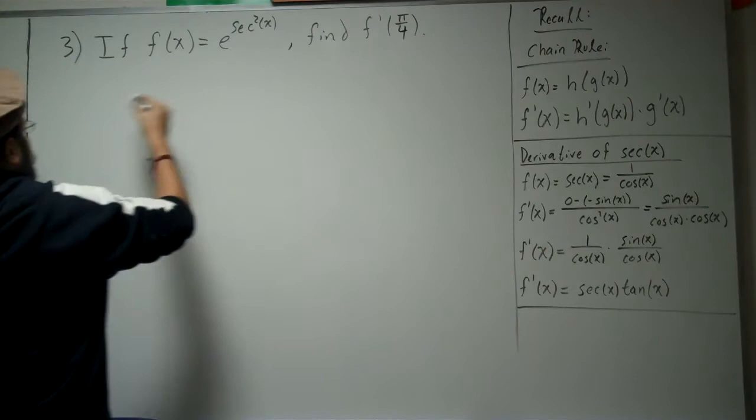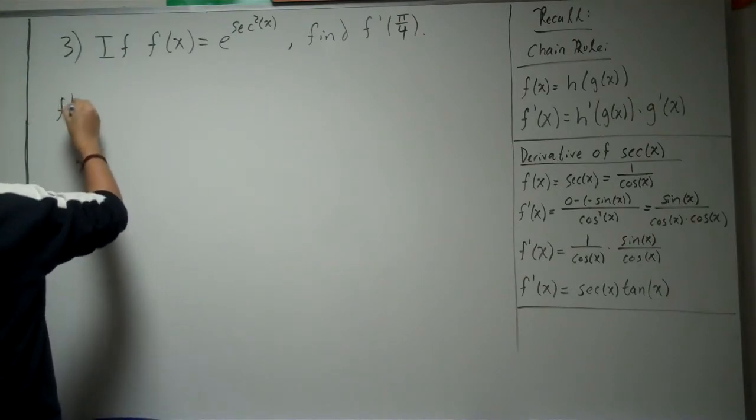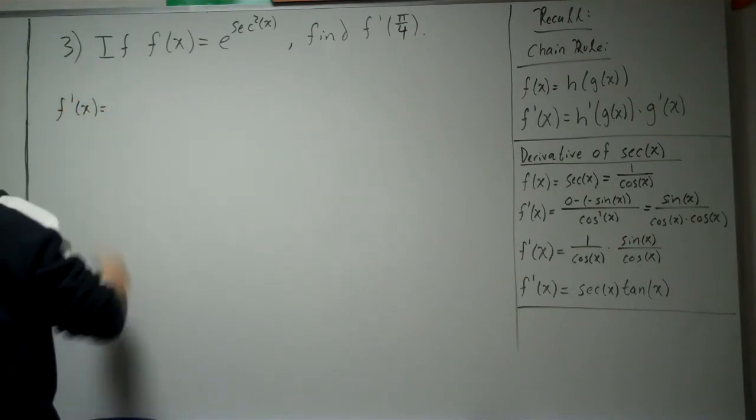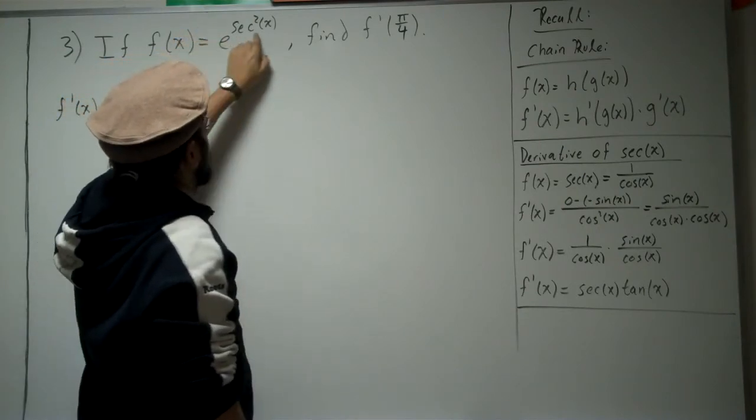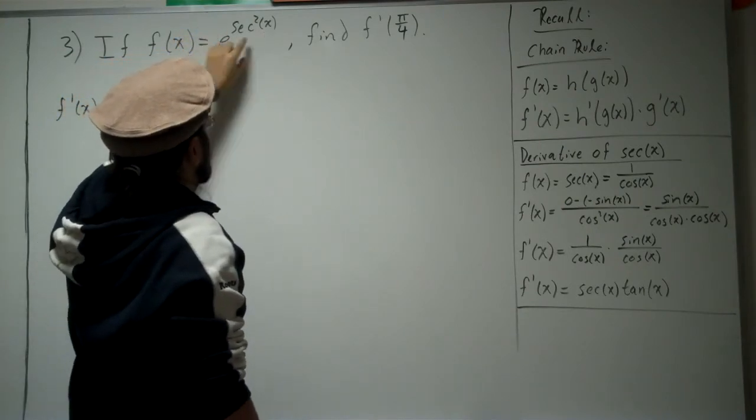Okay, so let's go ahead and compute the derivative. Right off the bat, we have an inner function, which is secant squared, and an outer function, which is e to the something.